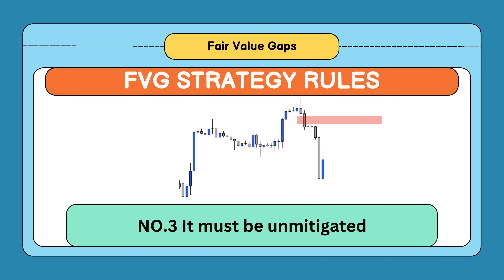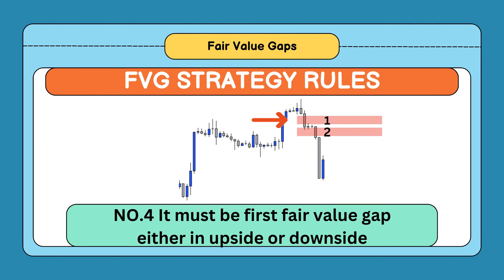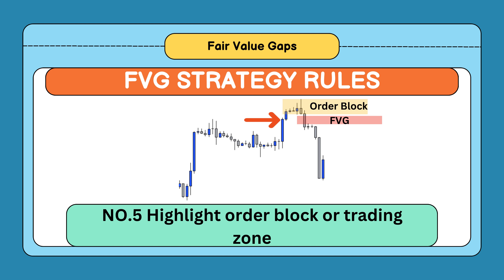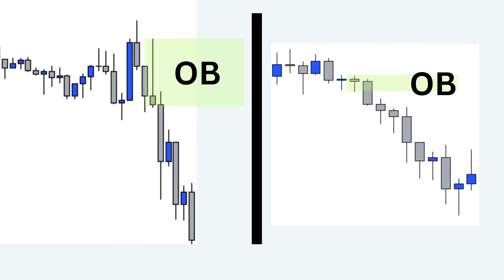Rule four: it should be the first fair value gap in a move. One move can create multiple fair value gaps, so we will use only the first fair value gap — or you can also say the lowest fair value gap in a buy move and the highest fair value gap in a sell move. Rule five: after finding fair value gaps, we will highlight order blocks. The range of the first candle of the fair value gap is called the order block. These are examples of order blocks.